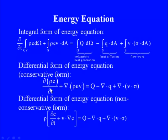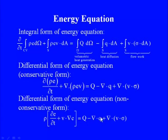The left-hand side can be further simplified using the chain rule of differentiation. Expanding and using the continuity equation, some terms vanish and we obtain the non-conservative form: ρ(∂e/∂t + v·∇e) = Q − ∇·q + ∇·(v·σ). Most of the time, specifically in finite volume and finite element formulations, the conservative form of the energy equation is used.